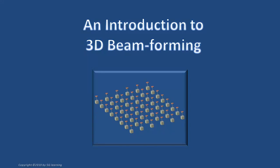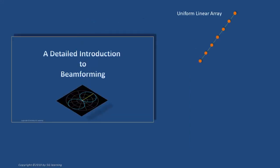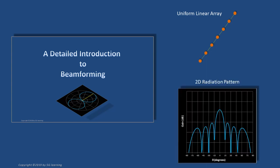An introduction to 3D beamforming. In a previous video entitled 'A Detailed Introduction to Beamforming,' we concentrated our attention on arrays where the radiation elements lay on a straight line and the inter-element distance is constant. As the radiation patterns are symmetric around the array axis, their properties may be completely described by a two-dimensional representation on a plane including that axis.